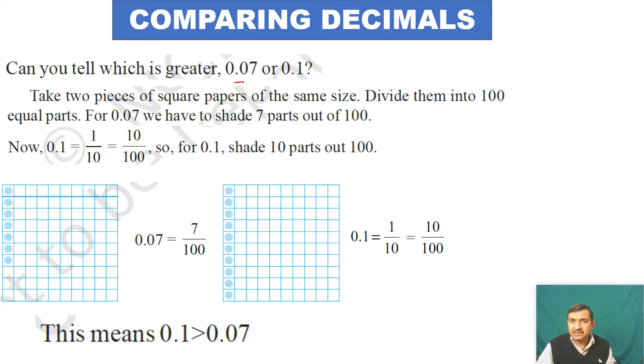Take two pieces of square paper of the same size. Divide them into 100 equal parts - 10 horizontal and 10 vertical. For 0.07, we have to shade 7 parts out of 100.